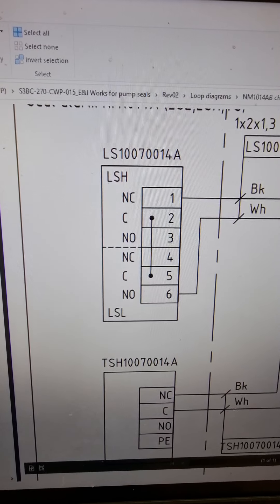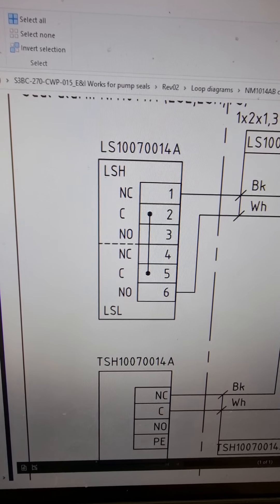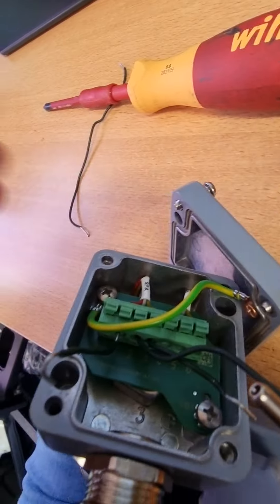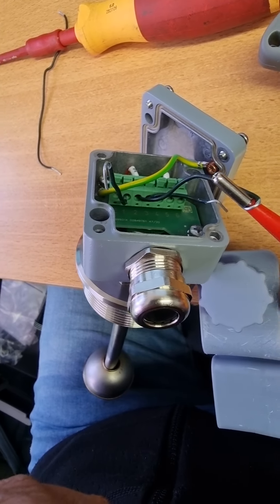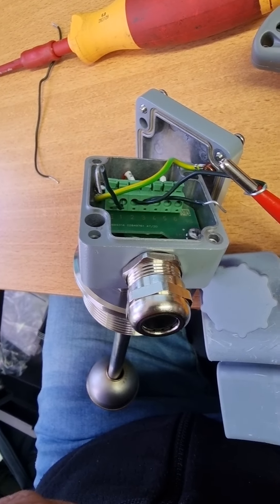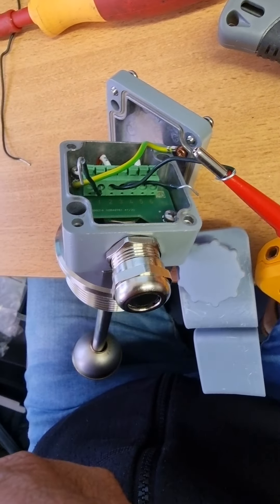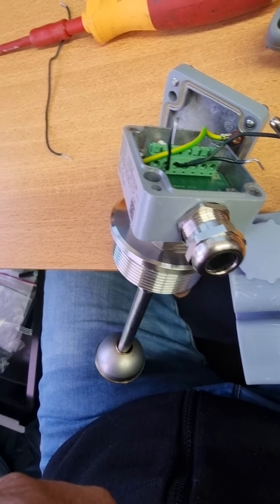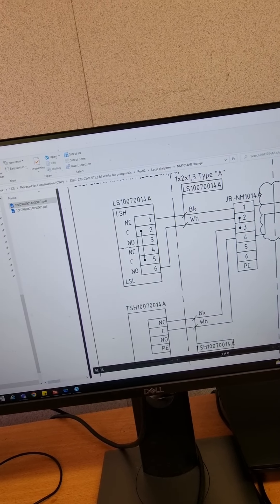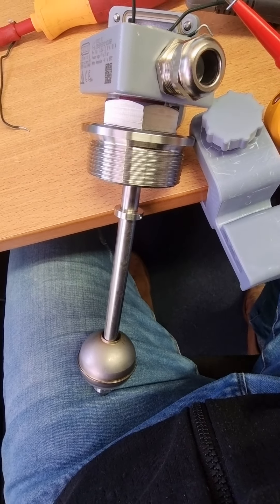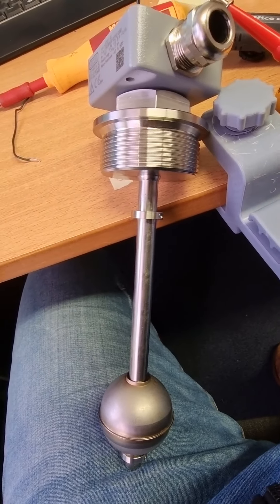Level switch high: two common and one is normally closed, so wired the same way. Two common connected here. Now in the normal state, one and two is closed. So now it's in the normal state for high level switch.